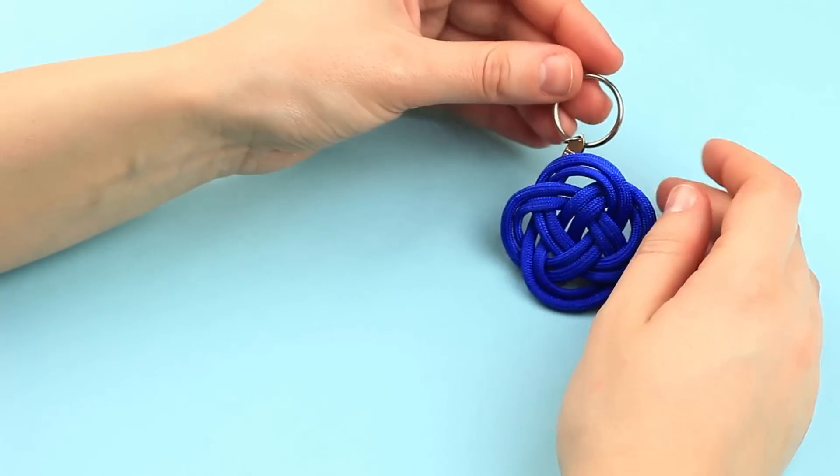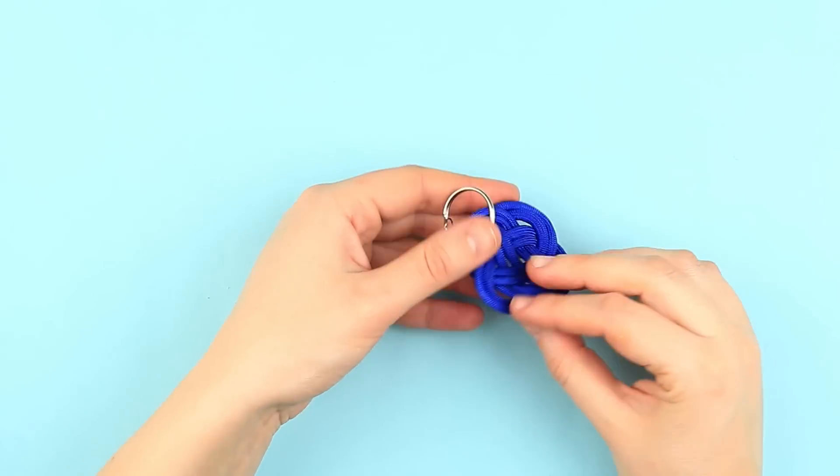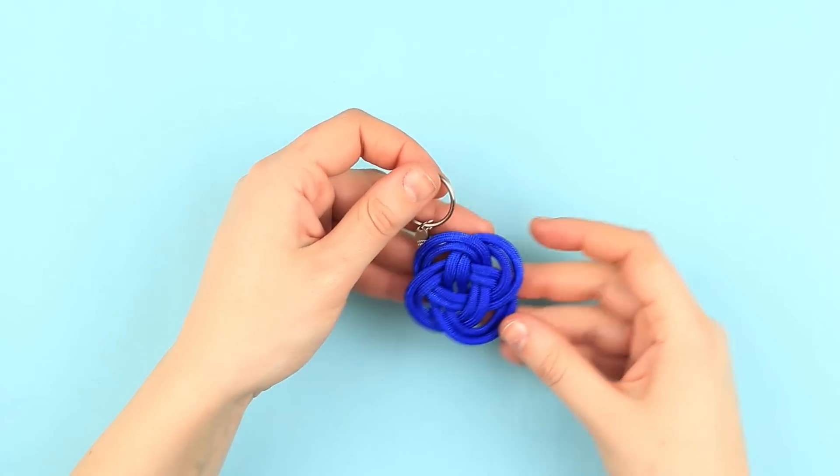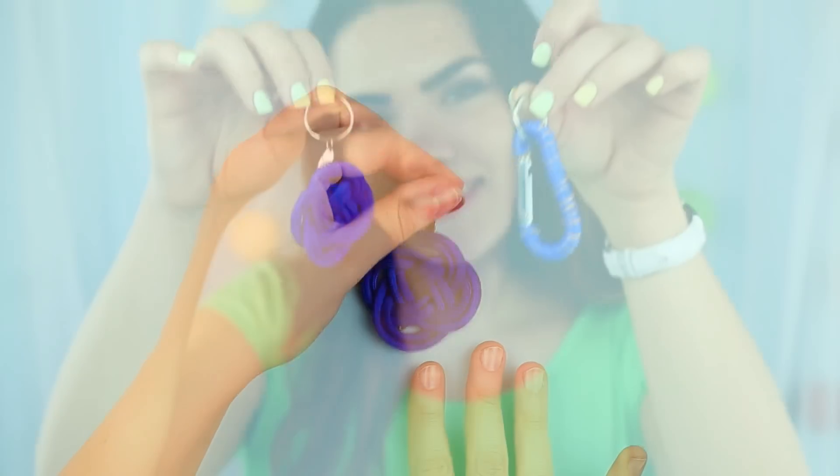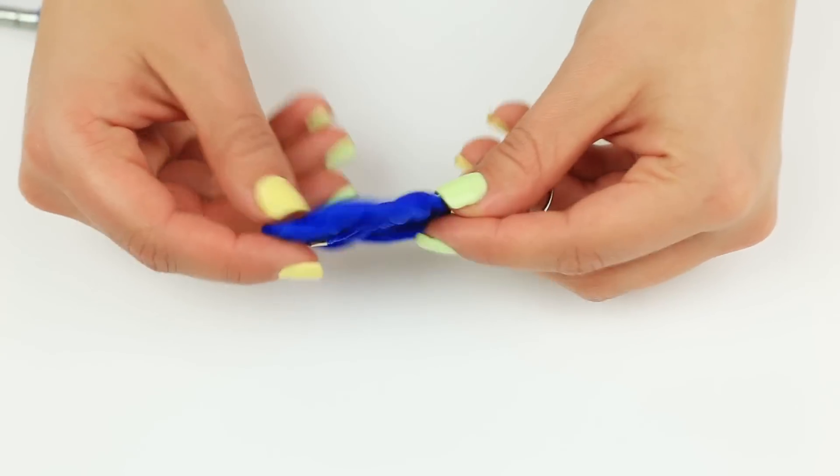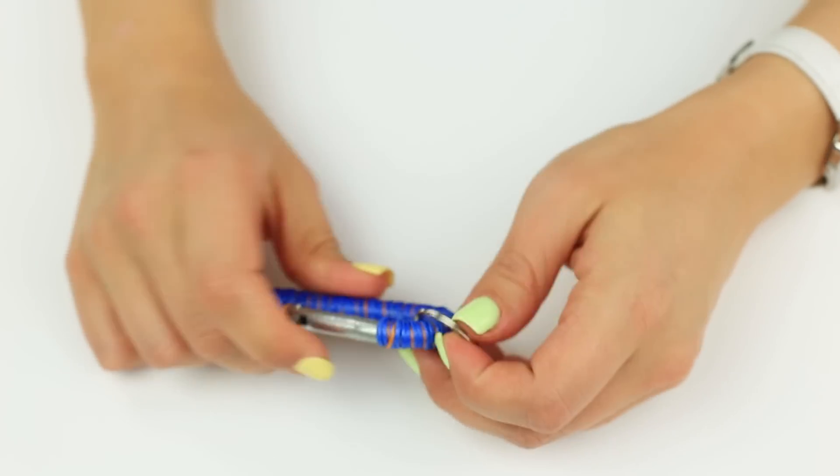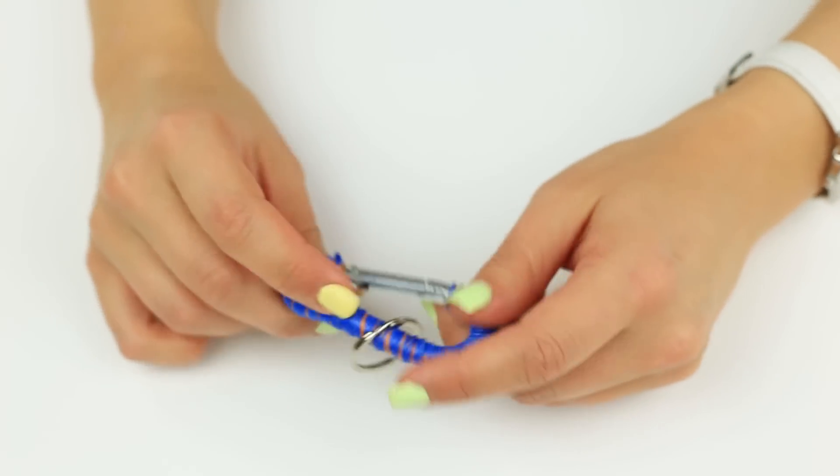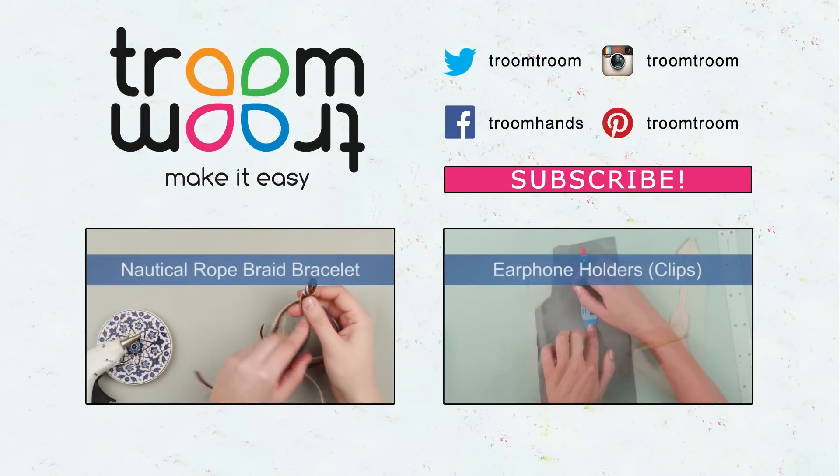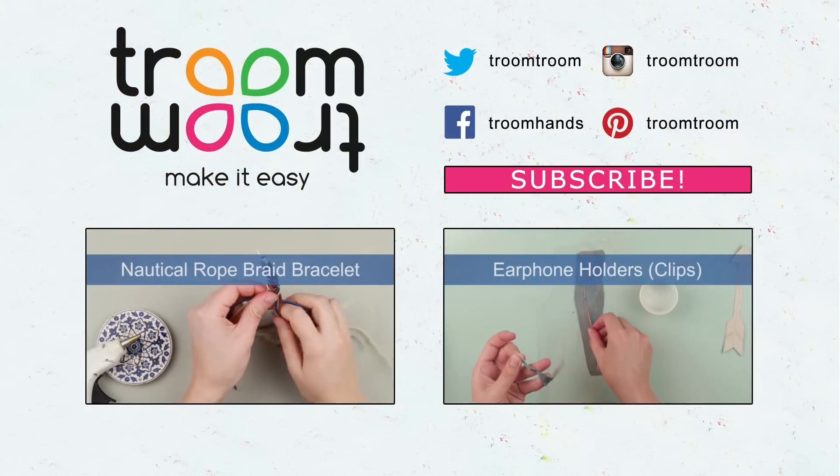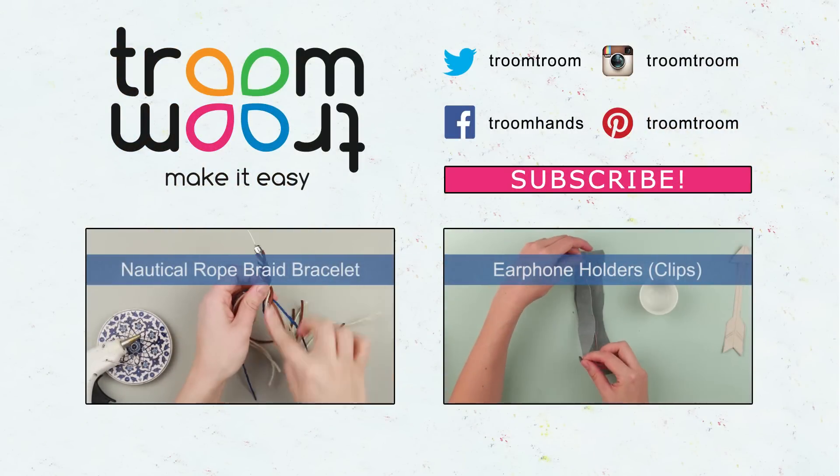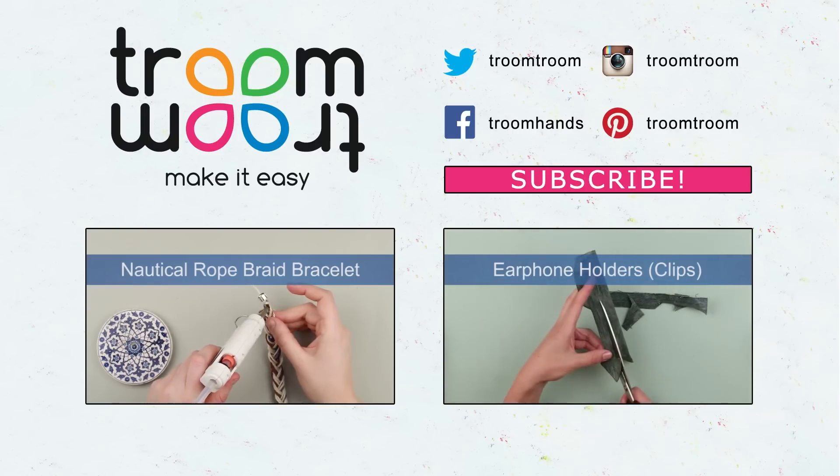The gorgeous royal blue Carrick Bend Matte keychain will become a wonderful gift for your boyfriend. Awesome nautical keychains will perfectly keep the keys safe and become your close friend's favorite accessory. Feel free to leave your comments. Hit the like button if you like the ideas. Be sure to subscribe to our channel to find lots of interesting gift ideas for any occasion.